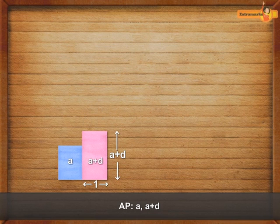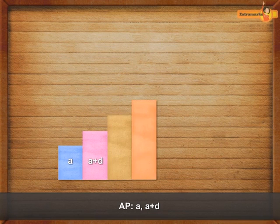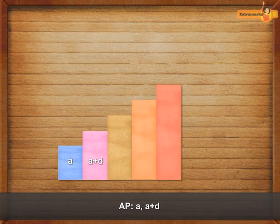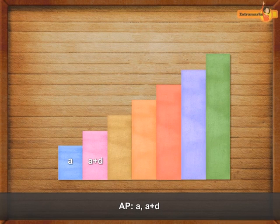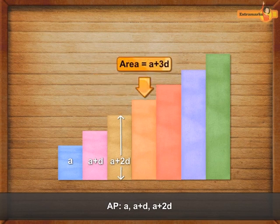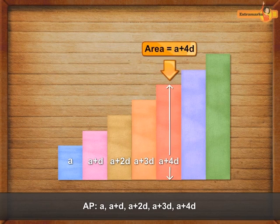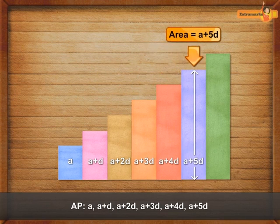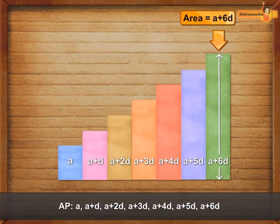Similarly, to represent the third term, fourth term, fifth term, sixth term and the seventh term of the arithmetic progression, we take strips of lengths a+2d, a+3d, a+4d, a+5d and a+6d units respectively.